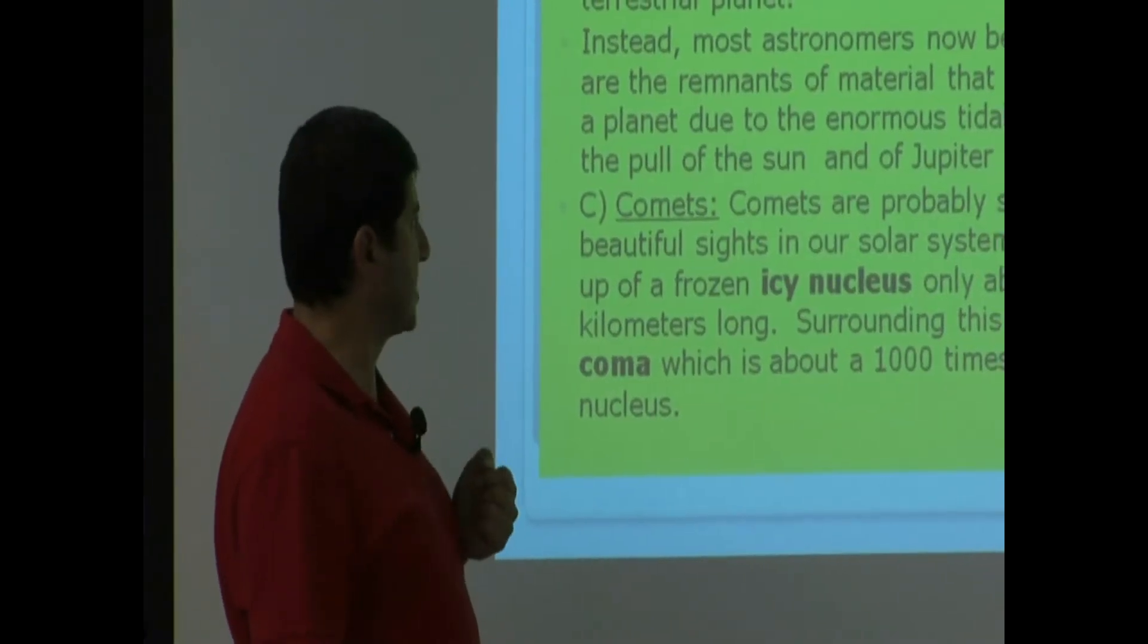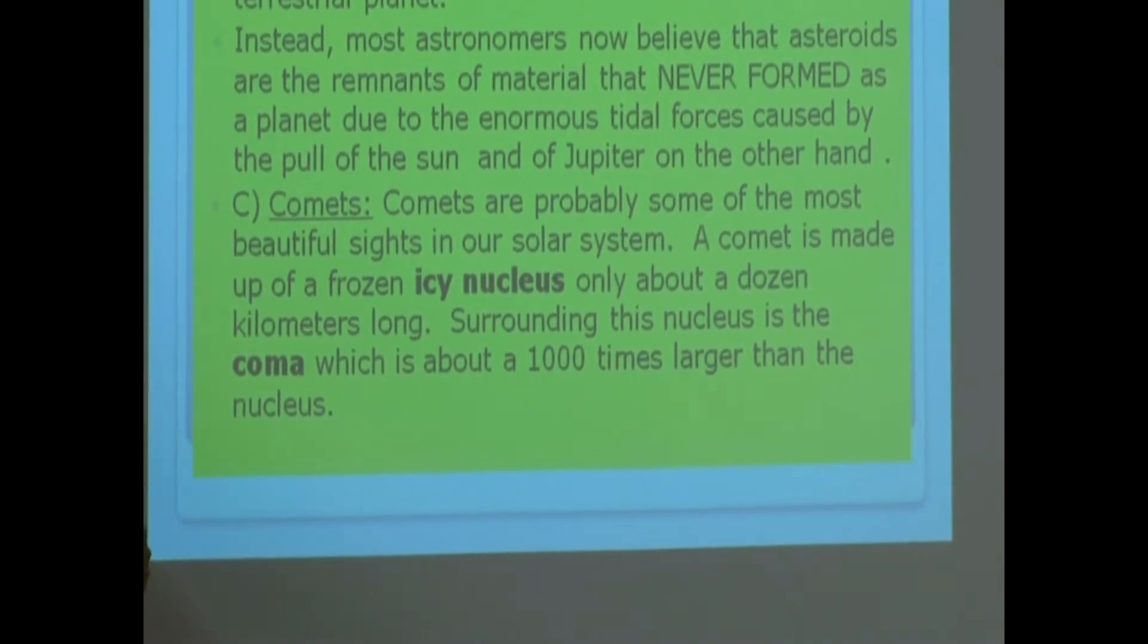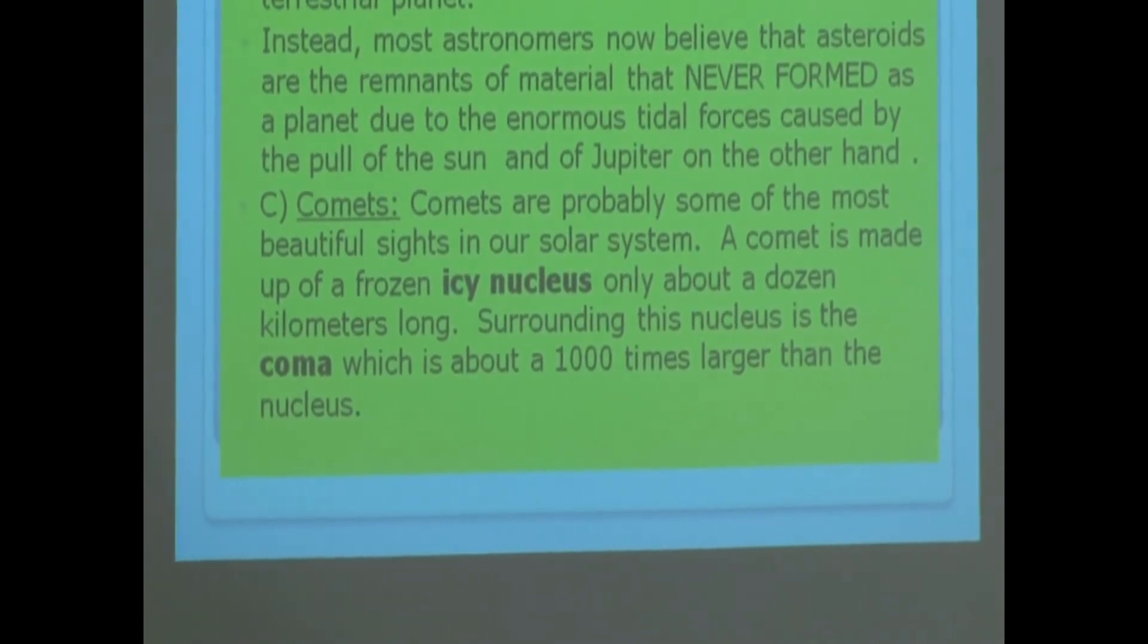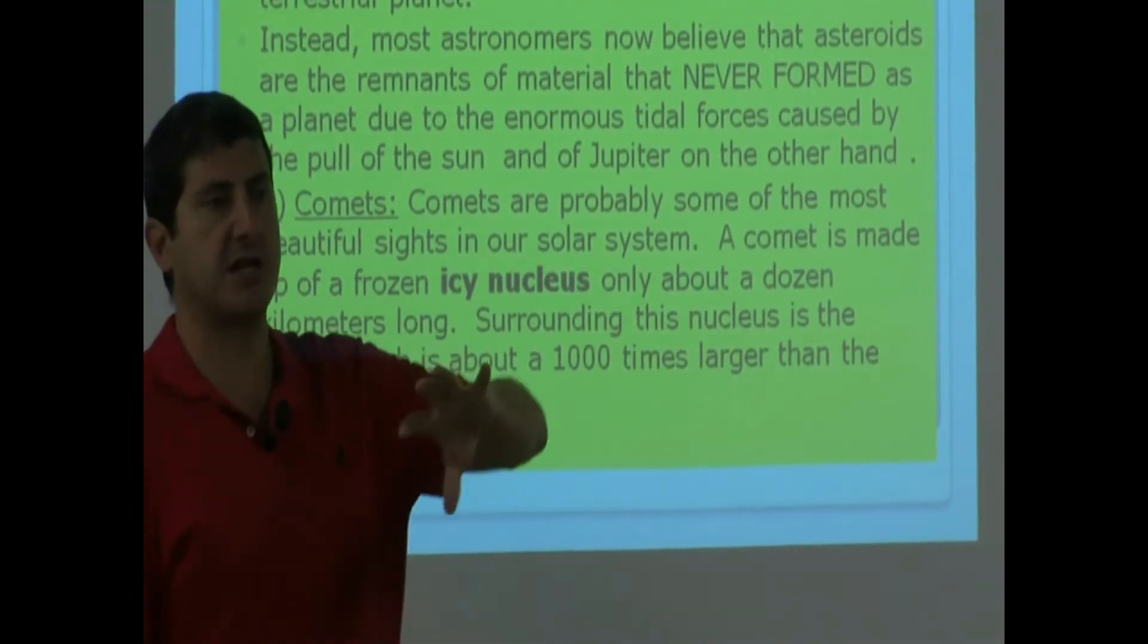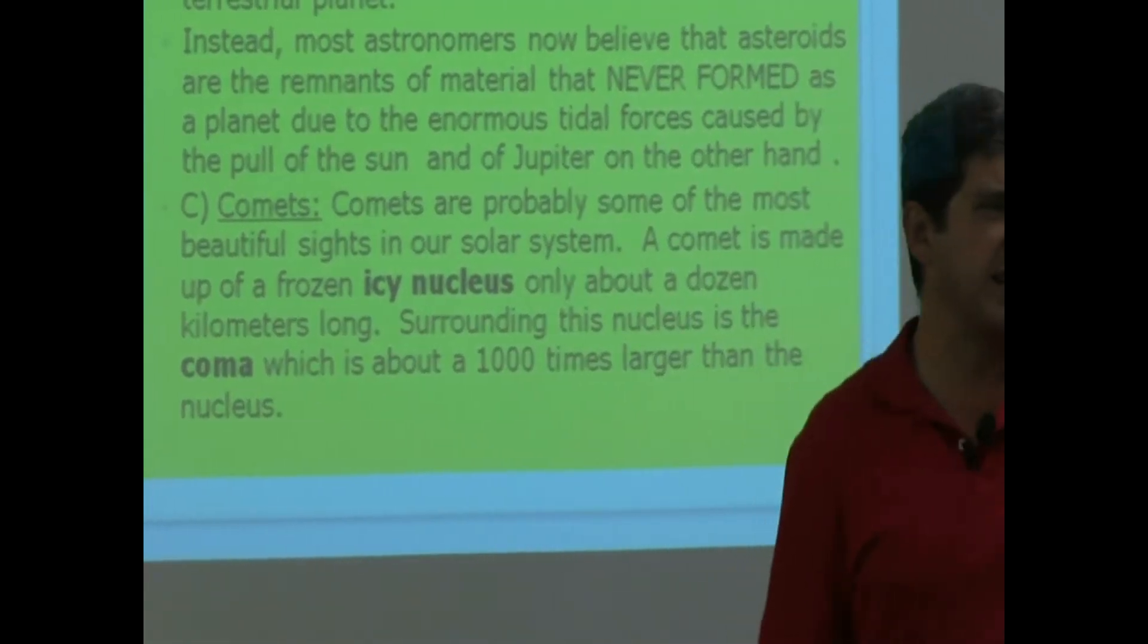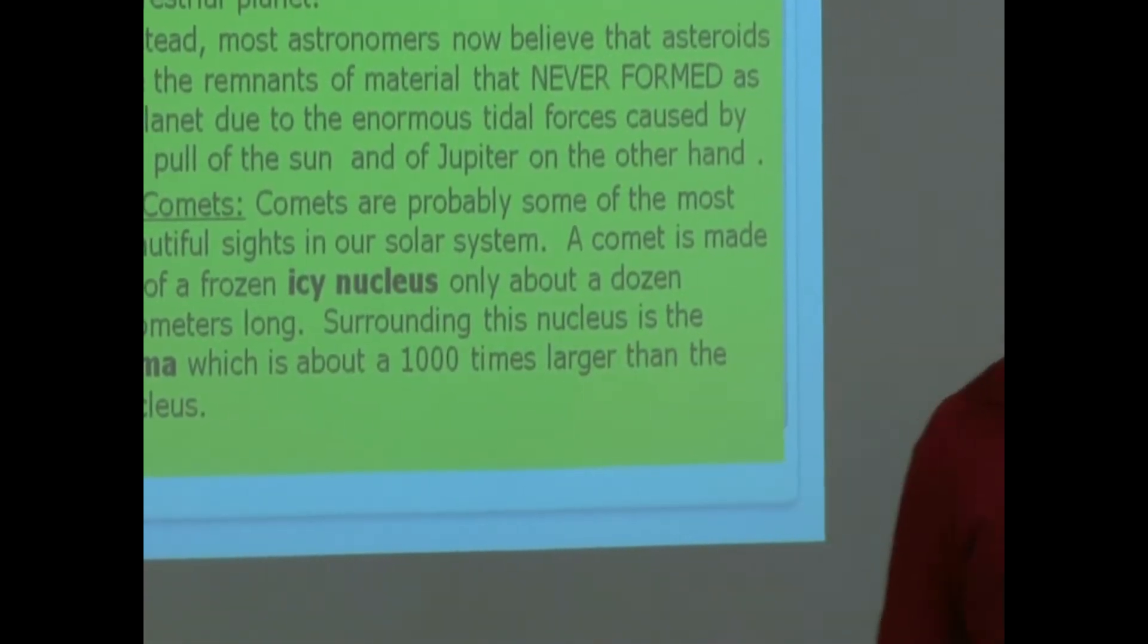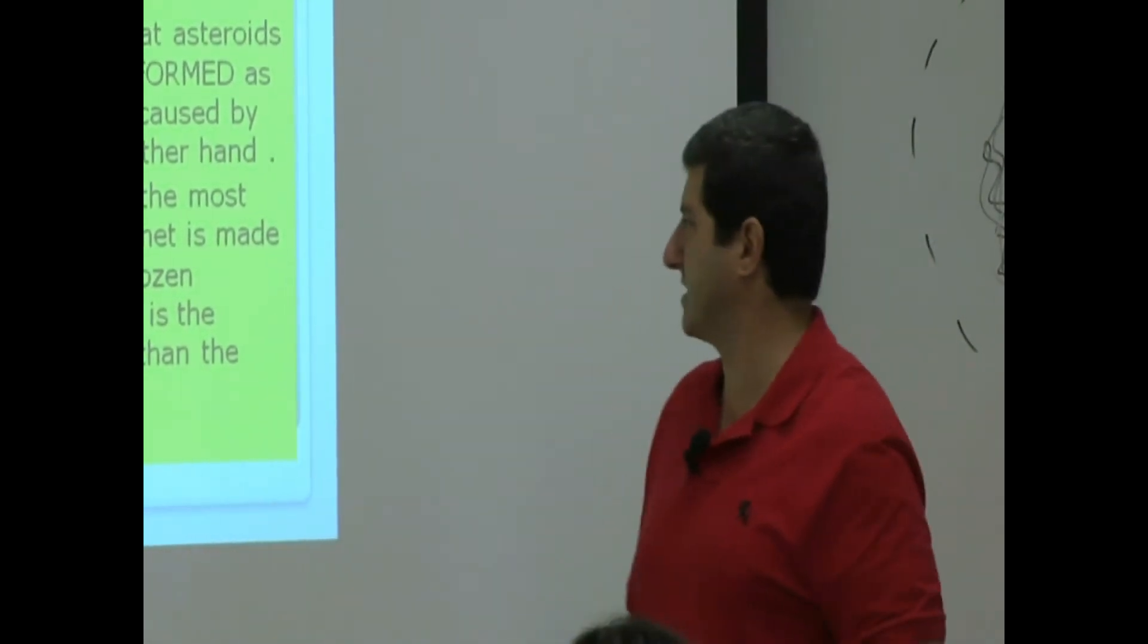Comets are probably some of the most beautiful sights in our solar system. A comet is made up of a frozen icy nucleus only about a dozen kilometers long. So it starts out in the outer solar system as a very small, tiny icy nucleus with rock and then it has some ice, water ice, and different kinds of ices around it.